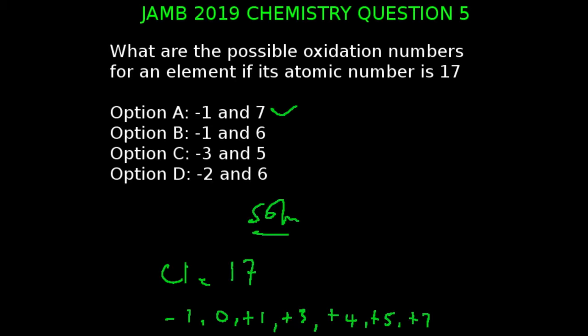You're looking at question five of the JAMB 2019 chemistry examination. What are the possible oxidation numbers for an element if its atomic number is 17? The correct answer to this question is option A, which is -1 and +7.